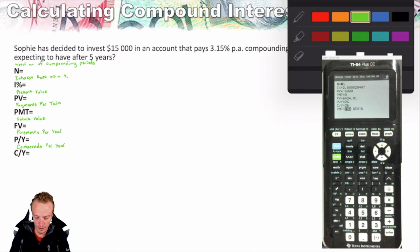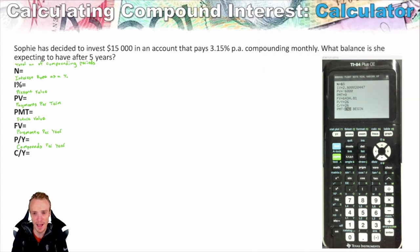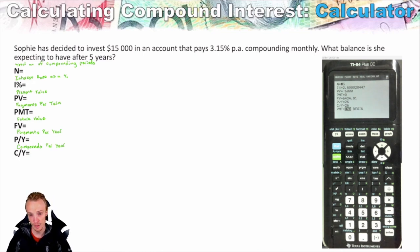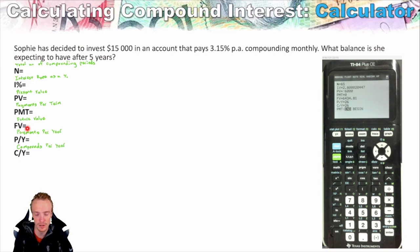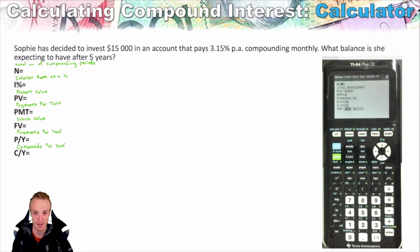So what we're going to do is go through several examples of how we actually use this calculator to answer these questions. Something really important here is showing your working when you use the graphics calculator. If you're using the graphics calculator to answer a question, this is how you show your working — you're showing what you're putting into your calculator to get your answer.